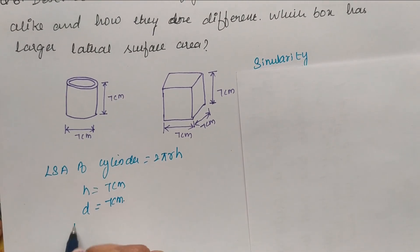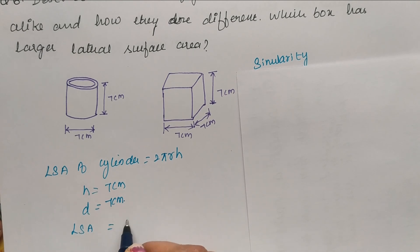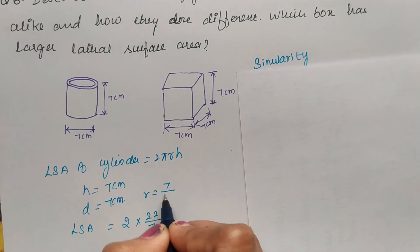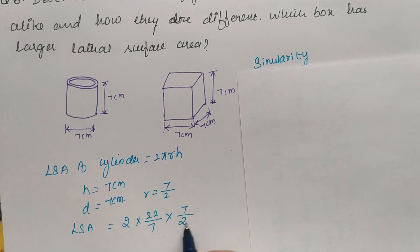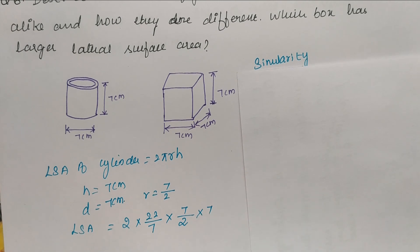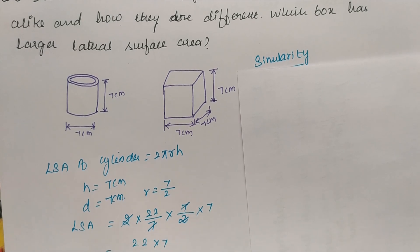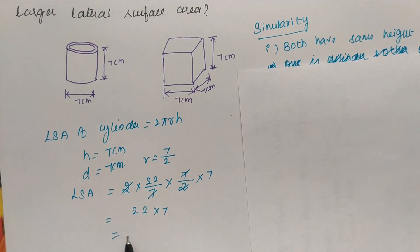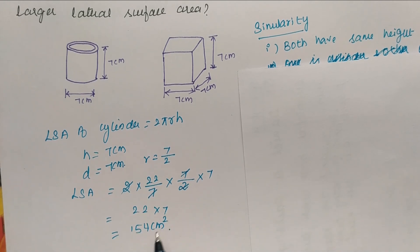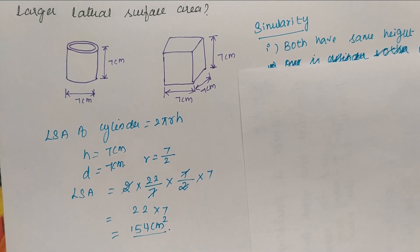Lateral surface area of cylinder is 2πrh. Pi value is 22/7, r is d/2 which is 7/2, times height 7. We can cancel 7 and 7, 2 and 2. Now 22 times 7 is 154 cm square. So lateral surface area of cylinder is 154 cm square.